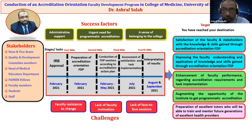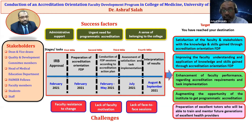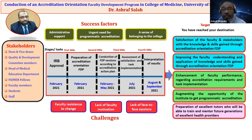The target outcomes of the project were classified into three categories: short-term, intermediate-term, and long-term outcomes. The short-term outcomes included satisfaction of the faculty and stakeholders with the knowledge and skills gained through the accreditation orientation FDP, and improving faculty understanding and application of knowledge and skills gained through the accreditation orientation faculty development program. The intermediate-term outcomes included enhancement of faculty performance regarding accreditation requirements and task implementation, augmenting the opportunity of the institute to get programmatic accreditation. Lastly, the long-term outcome is preparing excellent tutors who will be able to train and mentor future generations of excellent health providers.